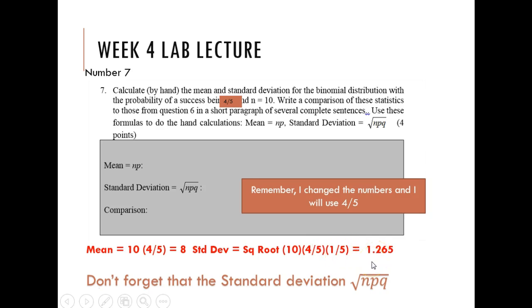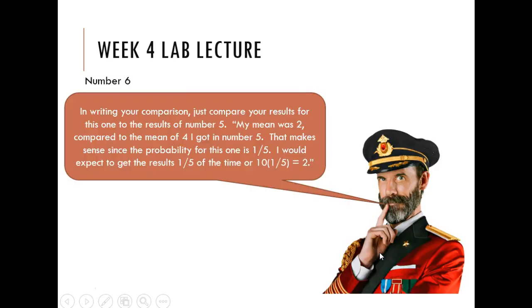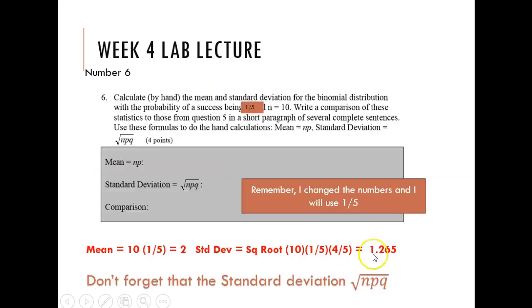Standard deviation would be the square root of ten times four-fifths times one-fifth, which would be 1.265. If you could not hear me in the live lecture, the square root of ten times four-fifths times one-fifth is 1.265. And if you remember, the square root of ten times one-fifth times four-fifths was 1.265 for my number six example two.